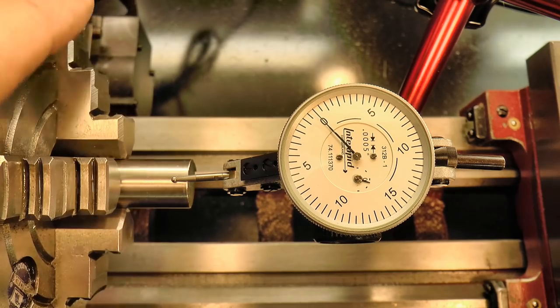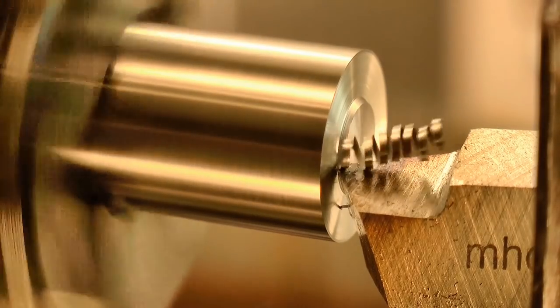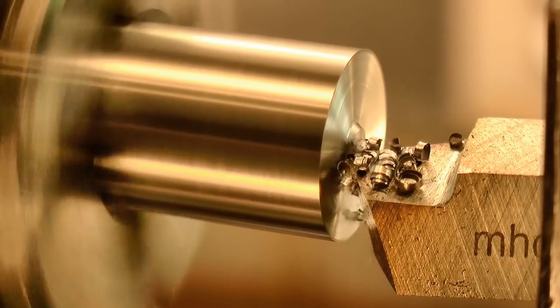So let's get started. The arbor needs centers on each end, so I set it to run true in a 4-jaw chuck, and then faced and center drilled the ends.